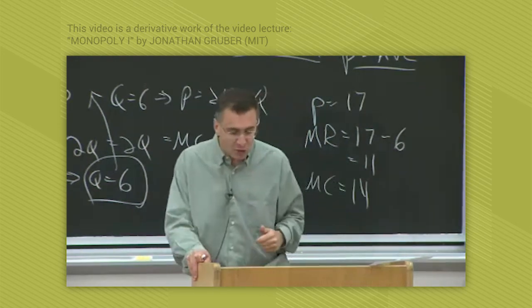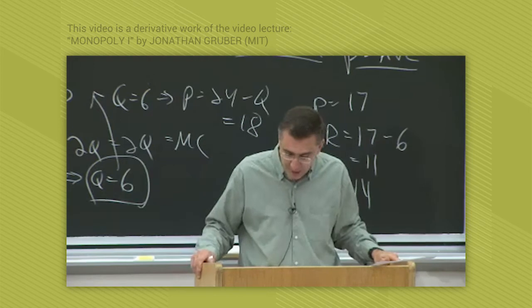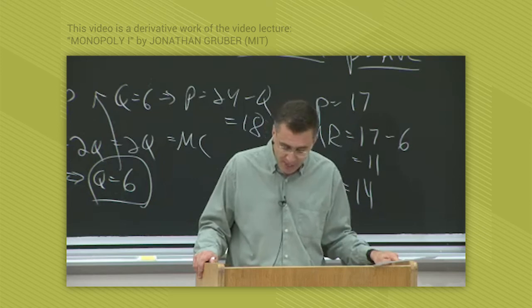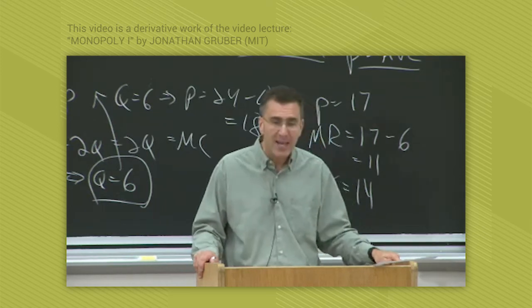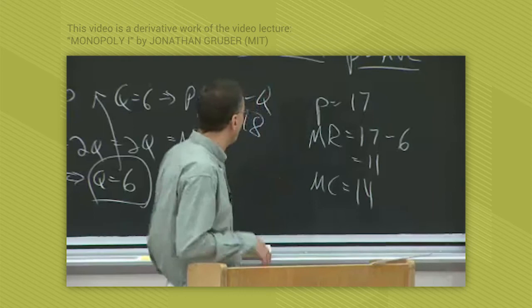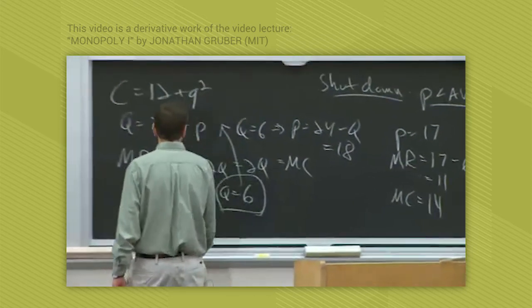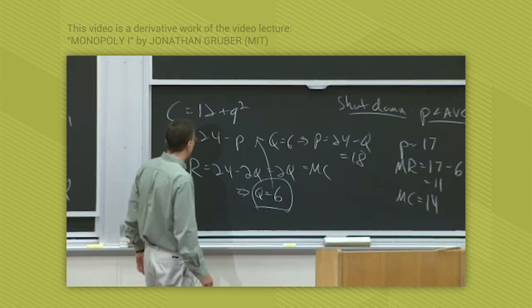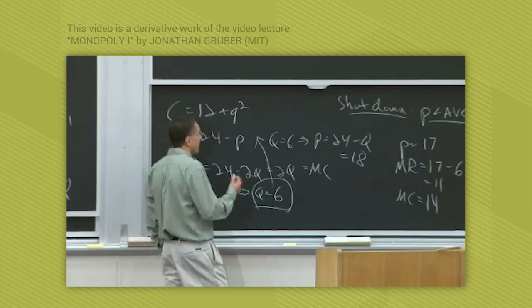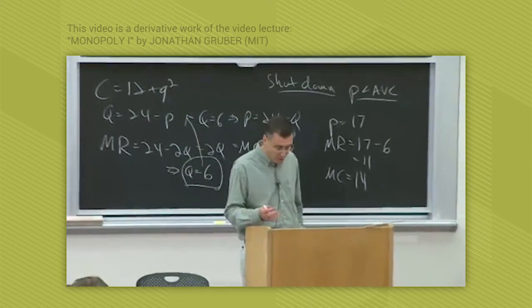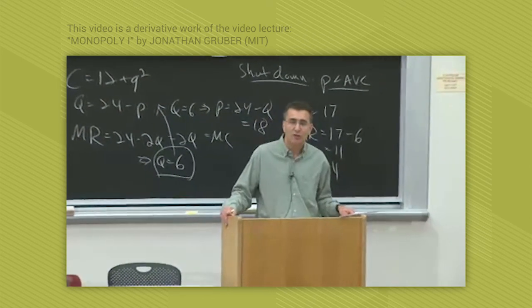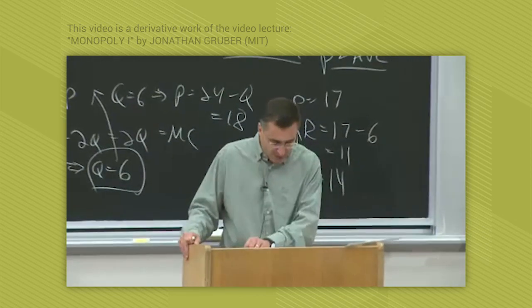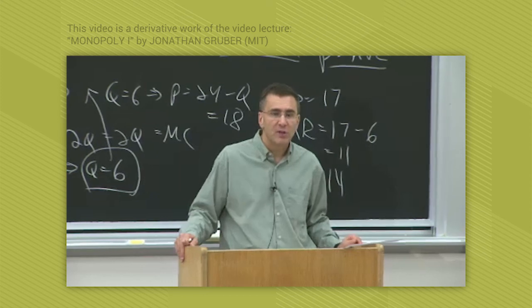And that's why the monopolist stops short of what would be the perfectly competitive outcome. What would the perfectly competitive firm do? The perfectly competitive firm would set marginal cost equal to demand, and they would end up producing where marginal cost equals demand. So demand here is 24 minus p, marginal cost is 2q. So they would end up setting, they would end up producing where marginal cost equals demand at a much higher level, charging a slightly lower price. So what you see is the monopolist ends up selling fewer units at a higher price.